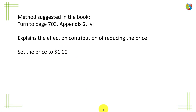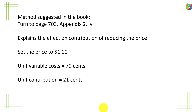In the general example, the unit variable costs are 79 cents, meaning the contribution margin is the remainder — 21 cents, or 21%.